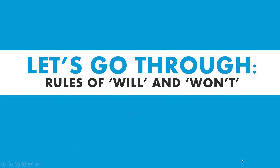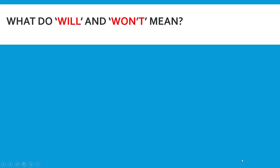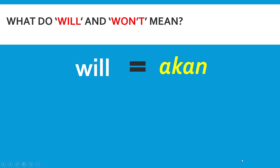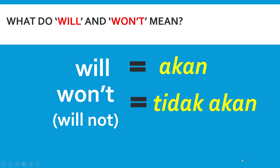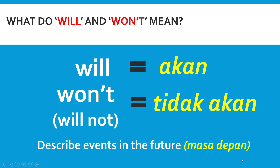Without further ado, let us move on to the first activity of our lesson today, which is to go through the rules of 'will' and 'won't'. First and foremost, what do 'will' and 'won't' mean? Basically, 'will' in BM means 'akan'. Therefore, 'won't', which also means 'will not', means 'tidak akan' in BM. The functions of 'will' and 'won't' are used to describe events in the future.